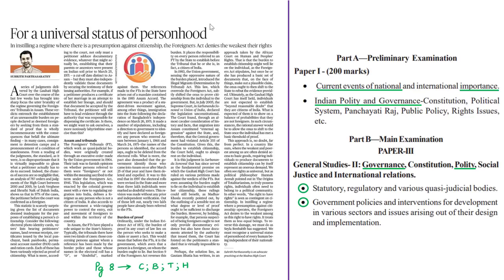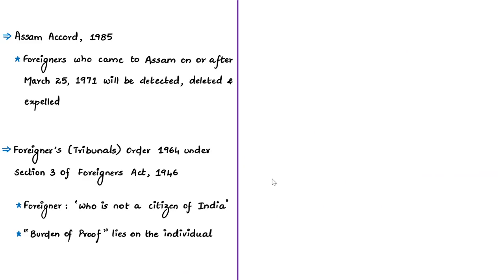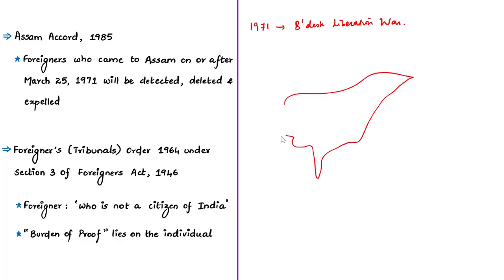Let us look at an editorial discussing the difficulties faced by persons excluded from the National Register of Citizens, who have to go to the Foreigners Tribunal to prove their citizenship. The syllabus relevant to this editorial is given here for your reference. As we know, India witnessed huge migration surrounding the 1971 Bangladeshi liberation war. Following this, Assam — which received the largest number of Bangladeshi migrants — witnessed huge protests, and in 1985, the Assam Accord was signed to ease the situation.